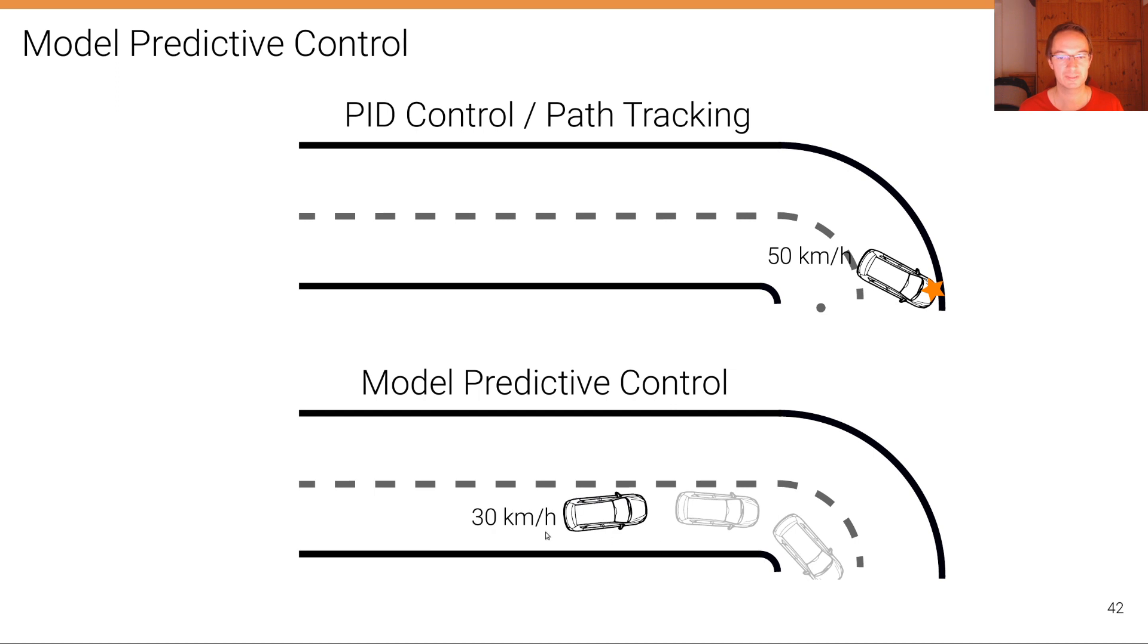So we're decelerating to 30 kilometers per hour, to 20 kilometers per hour, and then we're making the right turn. That's the difference between path tracking and model predictive control when considering high-speed driving and situations where a long look-ahead is required.